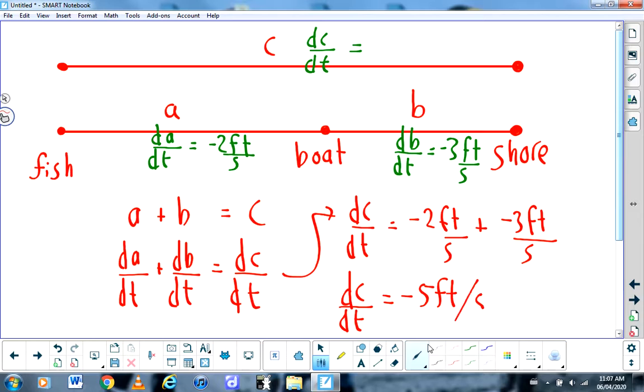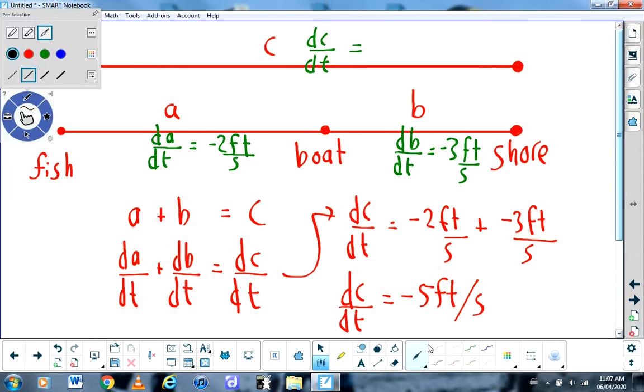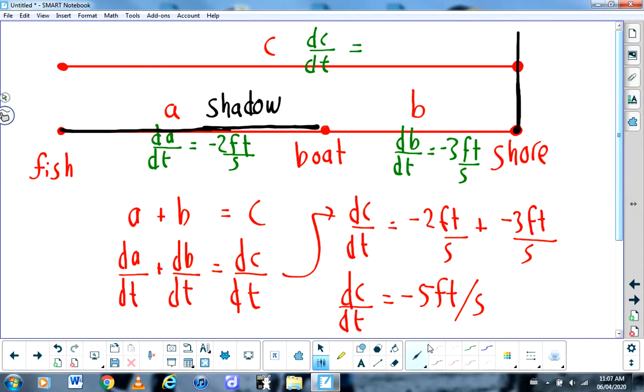Now, again, I don't want to do your assignment for you. I hope that discussion that I just had about fishing and boats and the shore and the location of the fish makes sense. All that I will tell you to help you apply this to the related rates problem is that this is analogous to the shadow. This point on the shore is really the location of the lamp post.